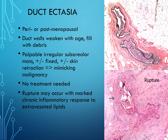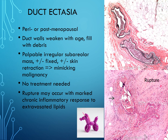Duct ectasia is a very common condition that occurs with age as the walls of the duct weaken, fill with debris, and become expanded like a balloon filled with histiocytes. Sometimes it's not palpable, but other times it can mimic cancer. No treatment is necessary if biopsy confirms it's benign. These ducts can rupture, causing macrophages to come in and clean up the debris, leading to fibrosis and inflammation.